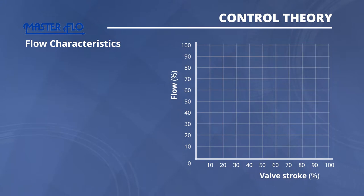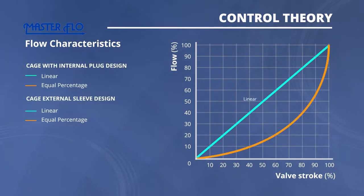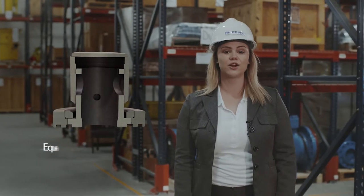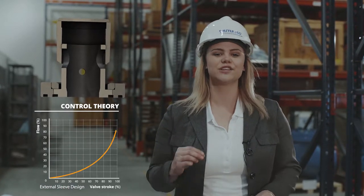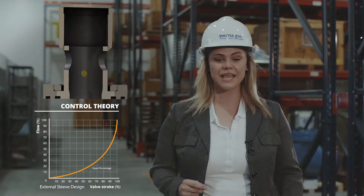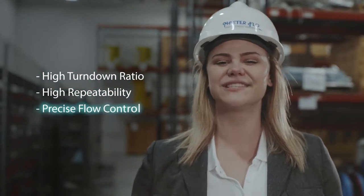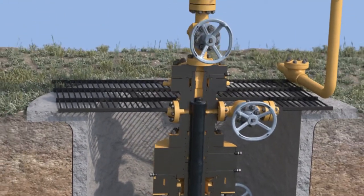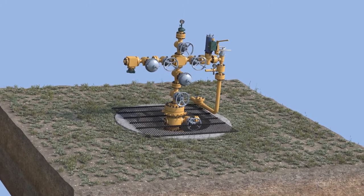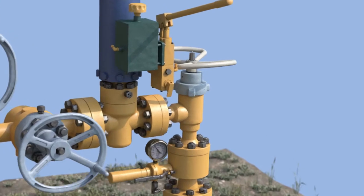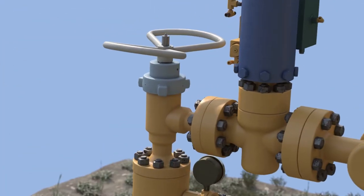The cage with internal plug and external sleeve choke valve designs are both characterized by equal percentage or modified parabolic control. They provide a gradual response in the lower portion of stem travel, delivering a high level of initial control, which brings the well on stream. As the valve is opened and the flow increases, this level of control is maintained throughout the stem travel, resulting in high turndown ratio, high repeatability, and precise flow control. This is imperative because a well-controlled flow allows you to ramp up your well slowly. A rapid well ramp-up can destabilize it, potentially causing a collapse and reducing the well's productivity index. Avoiding damage to your most valuable asset — the reservoir — is crucial.